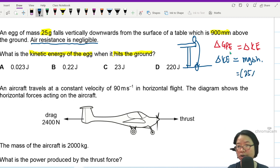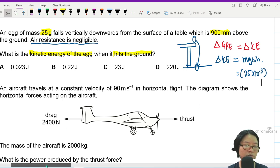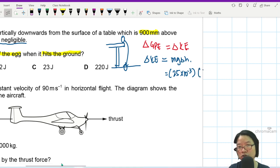This will be 25 gram times 10 to the power of negative 3. I'm going to move this to the side so I've got a bit more space. G is 9.81, and the height is 900 mm. So it's 0.9 meter.